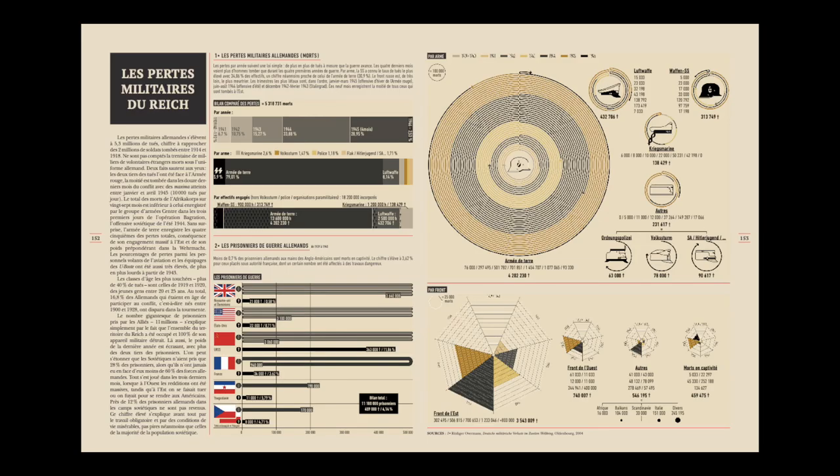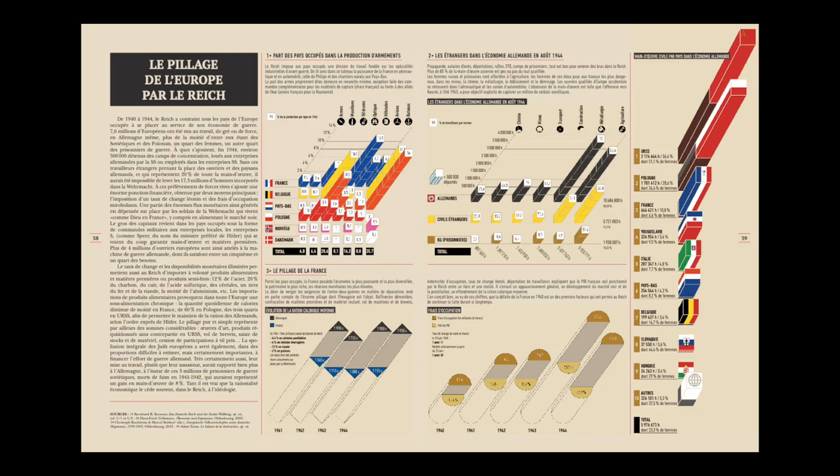Des aspects aussi variés que possible : les pertes, les prisonniers, la déportation, la Shoah — tout a été pour nous l'occasion, pendant trois années, d'aller rechercher dans les meilleures sources des dizaines de milliers de données, des données souvent numériques, que nous avons compilées et confiées à ce spécialiste, Nicolas Guira, dont le métier est de visualiser ces grandeurs. Cela permet d'établir des comparaisons chronologiques et internationales, et même de les croiser dans un seul graphique.